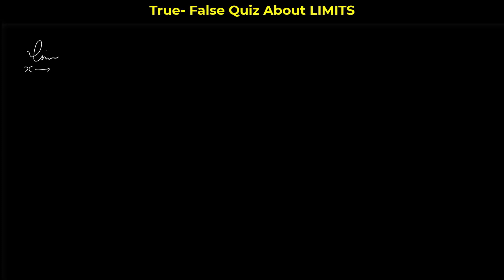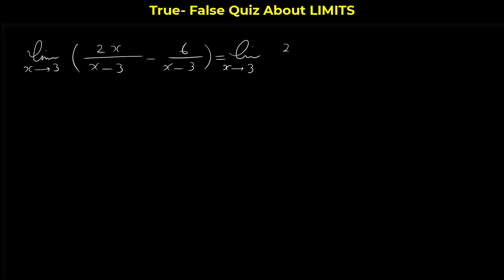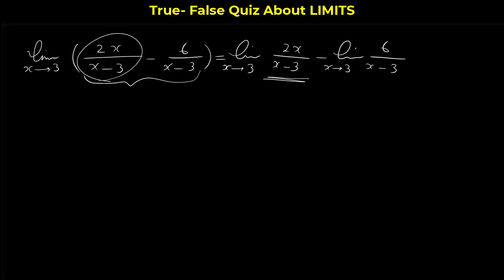The first statement is: the limit as x approaches 3 of the expression (2x/(x-3) - 6/(x-3)) is equal to the limit of 2x/(x-3) minus the limit of 6/(x-3) as x approaches 3. We have to figure out: can we write this limit as a limit of the first part of the expression minus the second part?